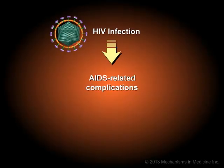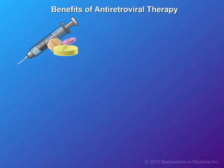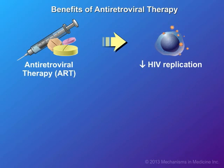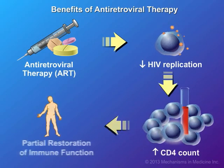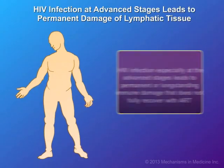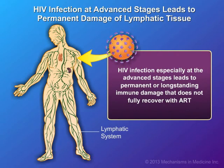AIDS-related complications are ultimately how patients die from HIV infection in the absence of therapy. Treatment with antiretroviral therapy, or ART, can slow down the replication of HIV and partially restore healthier levels of CD4 cells and subsequently immune function in the body. However, HIV infection, especially at advanced stages, leads to permanent or long-standing immune damage that does not fully recover with ART.